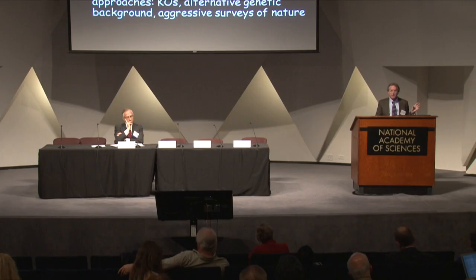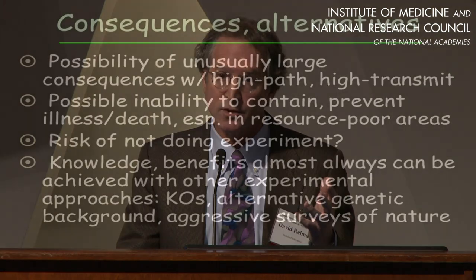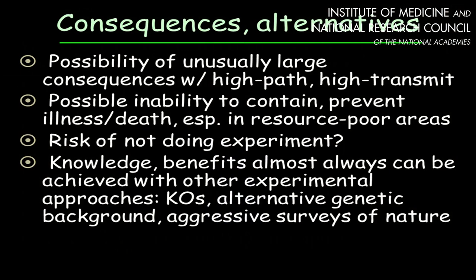The example Yoshi gave — the failure to learn what might enhance transmissibility in ferrets — isn't necessarily information that would help us understand what generates and enhances transmissibility in humans. There are uncertainties in those results, just as in the results of alternative approaches. I would make a plea that we have not undertaken sufficiently aggressive, deliberate, and thoughtful surveys of nature and triangulation of evolutionary paths, nor adequately studied combinations of mutations.